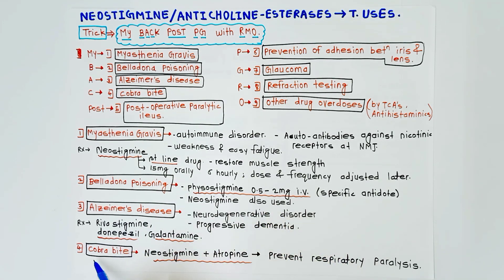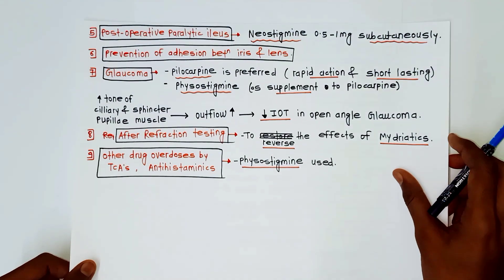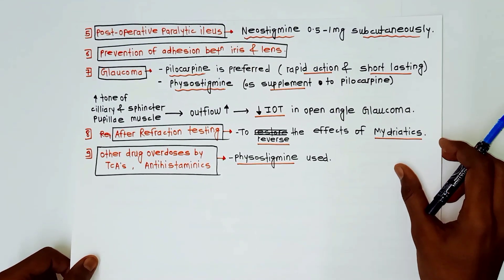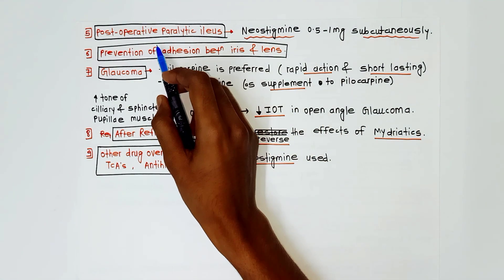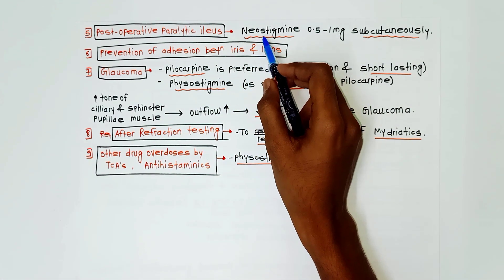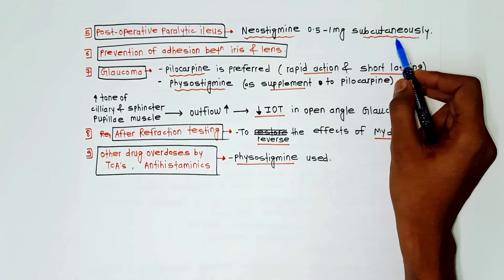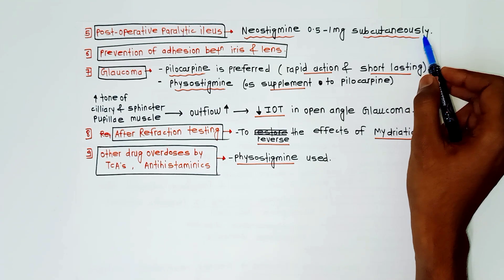For cobra bite, neostigmine plus atropine is used — they prevent respiratory paralysis. Next is post-operative paralytic ileus, in which neostigmine 0.5 to 1 mg subcutaneously is used. The subcutaneous route is important here.